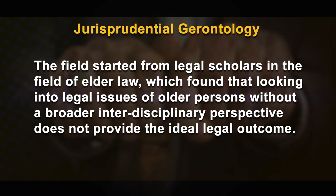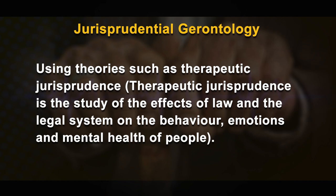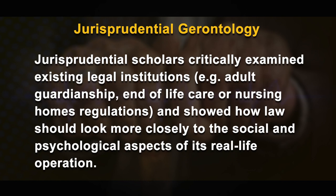Jurisprudential gerontology is a specialization within gerontology that looks into how laws and legal structures interact with the aging experience. The field started from legal scholars in elder law who found that examining legal issues of older persons without a broader interdisciplinary perspective does not provide the ideal legal outcome. Using theories such as therapeutic jurisprudence — the study of the effects of law and the legal system on the behavior, emotions, and mental health of older people — scholars critically examined existing legal institutions such as adult guardianship, end-of-life care, and nursing home regulations, and showed how laws should look more closely at the social and psychological aspects of their real-life operation.